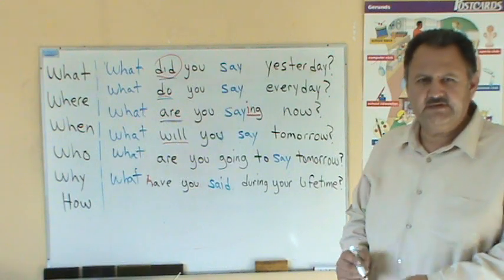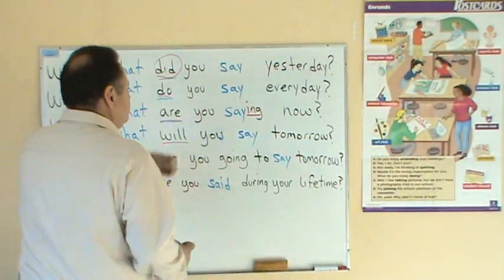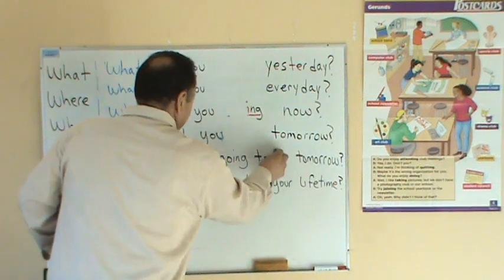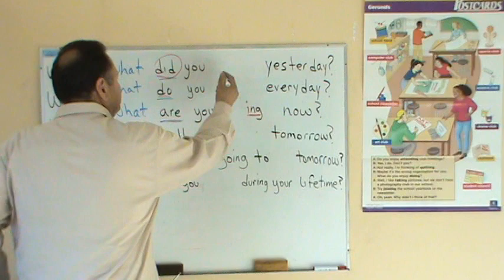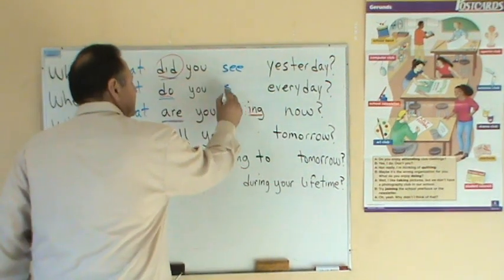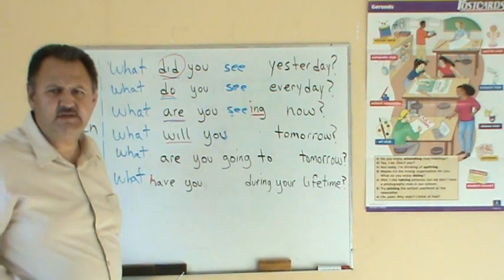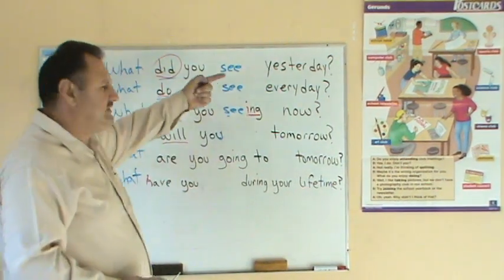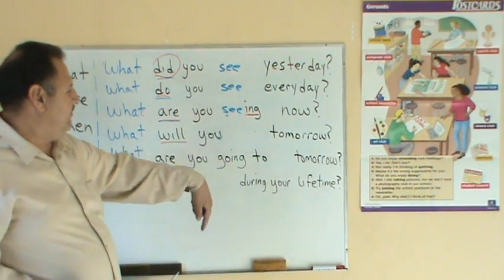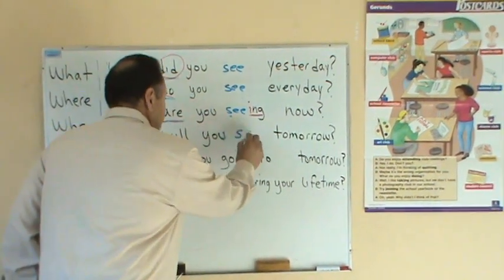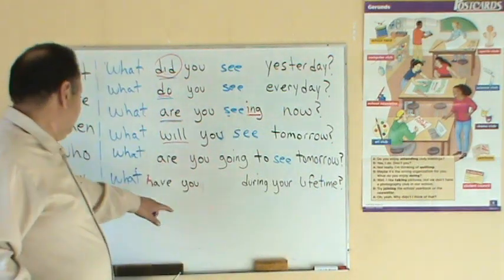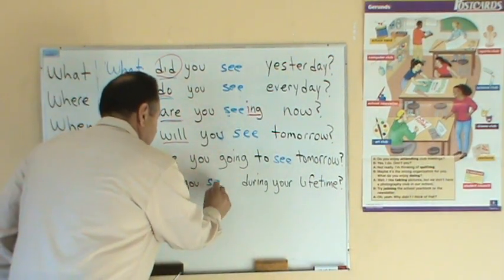Another thing — see, for example, common verbs: 'see.' What did you see? — ¿Qué viste? ¿Qué ves? ¿Qué estás viendo? ¿Qué vas a ver? ¿Qué has visto? What did you see yesterday? What do you see every day? What are you seeing now — ahora? What will you see tomorrow? What are you going to see tomorrow? What have you seen during your lifetime?